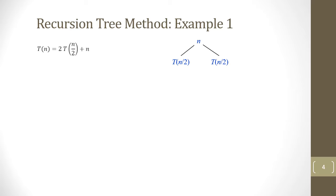To find T(n), we first need to find T(n/2). We plug n/2 into the recurrence equation and get T(n/2) = 2T(n/4) + n/2. So if we plug n/2 in for n, the recursive term becomes n/4 and the non-recursive term becomes n/2.